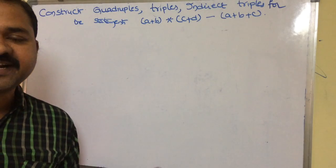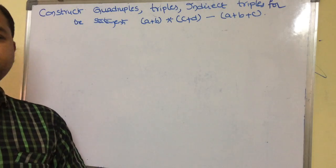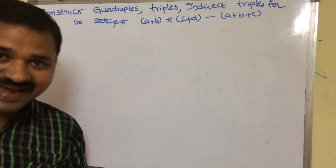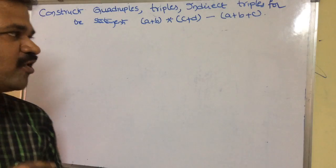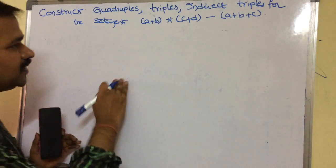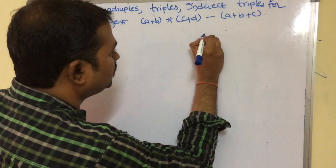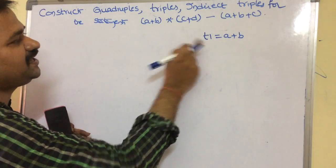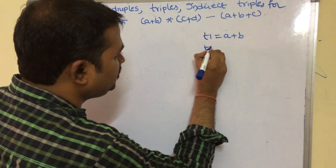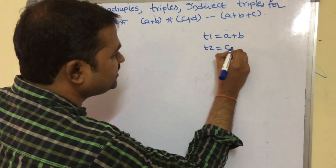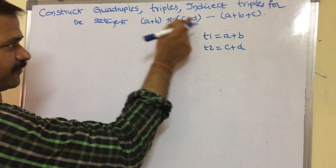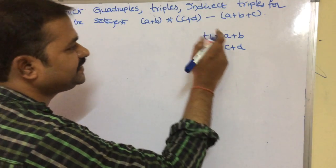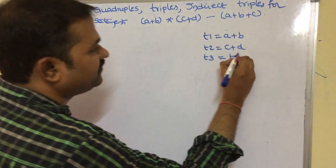In a three address code instruction, each instruction should contain maximum three addresses and the right hand side should contain maximum one operator. So let the first instruction be t1 is equal to a plus b. This a plus b result is available in t1. Next, t2 is equal to c plus d. The c plus d result is available in t2.